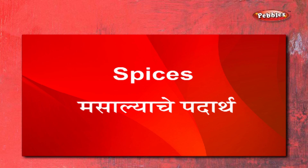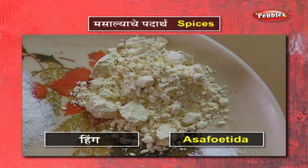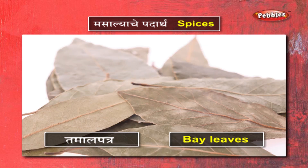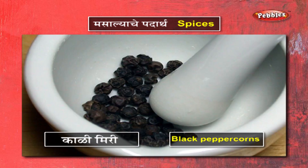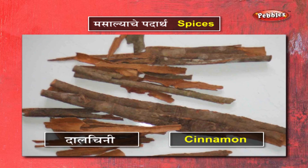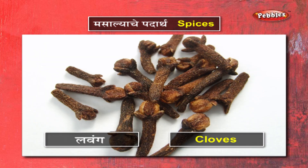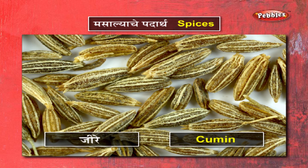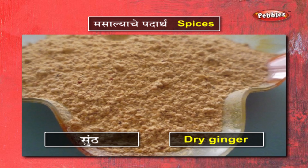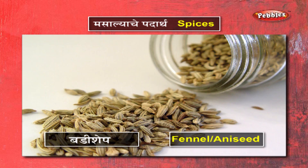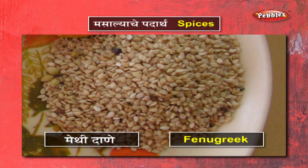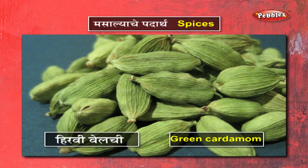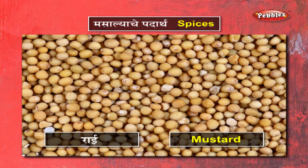मसाल्याचे पदार्थ - हिंग. तमालपत्र. काळी मिरी. दालचिनी. लवंग. धने. जिरे. सुंठ. बडीशेप. मेथी दाणे. हिरवी वेलची. राई.